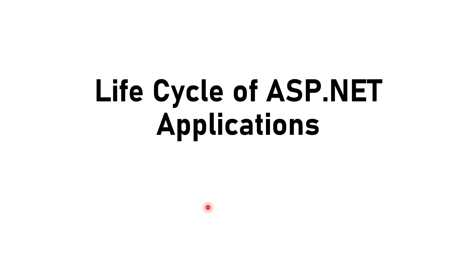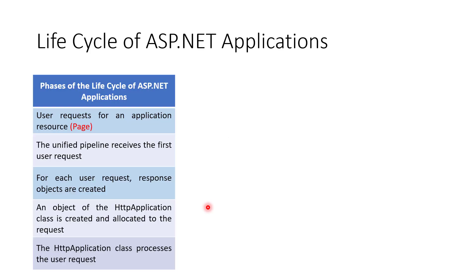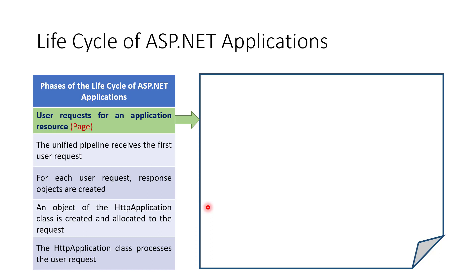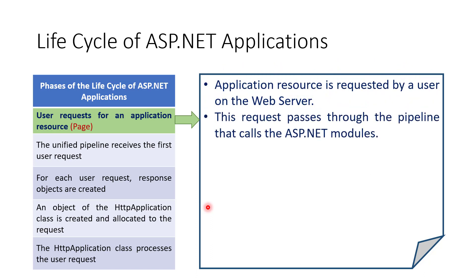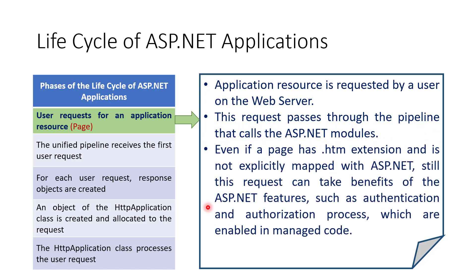The ASP.NET application life cycle has five phases. The first phase is the user request for an application resource. It refers to the phase in which an application resource is requested by a user on the web server. This request passes through a unified pipeline that calls ASP.NET modules. Even if a page has an HTML extension and is not explicitly mapped to ASP.NET, the request can still benefit from ASP.NET features such as authentication and authorization.